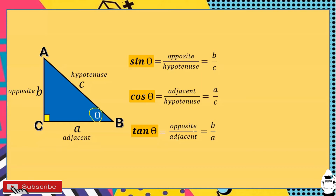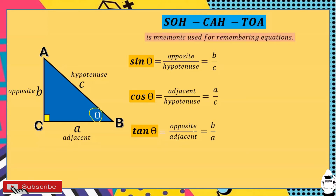To more easily remember how to find sine, cosine, and tangent, we use the mnemonic SOH-CAH-TOA. SOH means sine is equal to opposite over hypotenuse. CAH means cosine is equal to adjacent over hypotenuse. And TOA means tangent is equal to opposite over adjacent. Just remember this mnemonic as your clue.